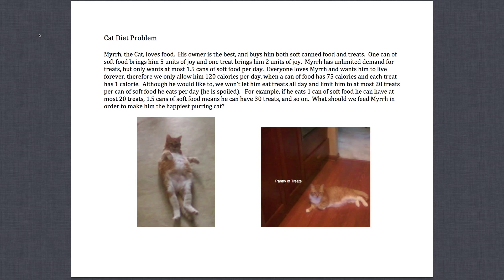So here I have an example, it's the cat diet problem. So Murr the cat loves food. His owner buys him soft food and treats and one can of soft food brings him five units of joy and one treat brings him two units of joy. Murr has a limited demand for treats but only wants at most 1.5 cans of soft food. Everyone loves Murr and therefore we only let him have 120 calories per day where one can of soft food has 75 calories and each treat has one calorie. We then say hey you can't eat treats all day even though you want to.